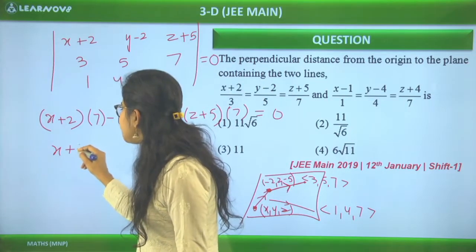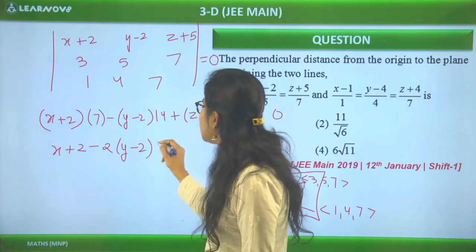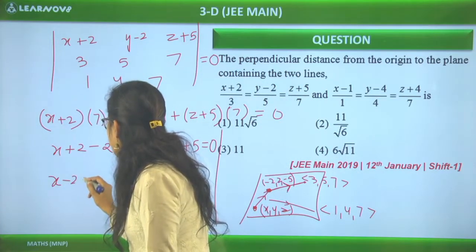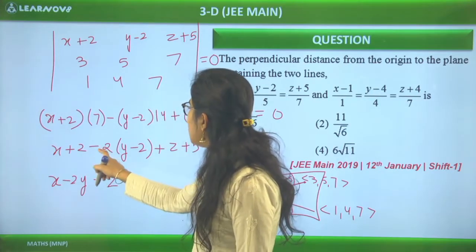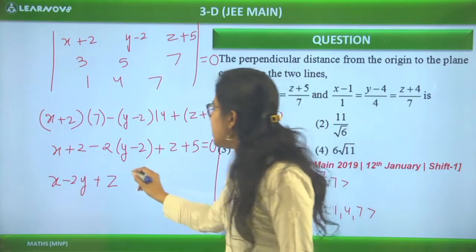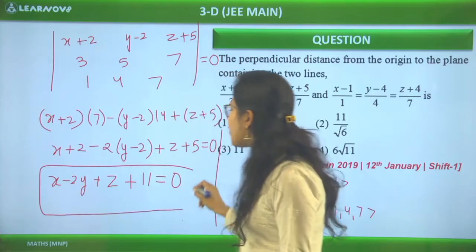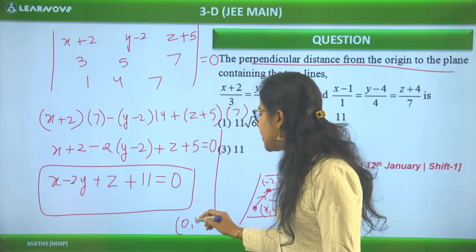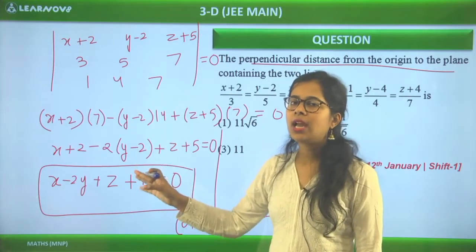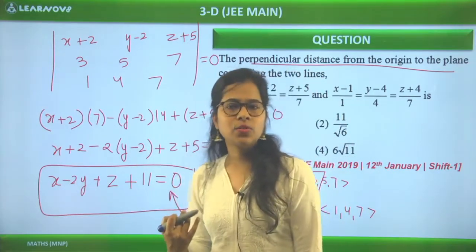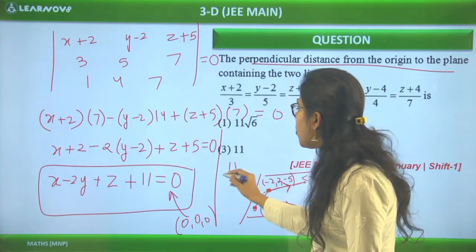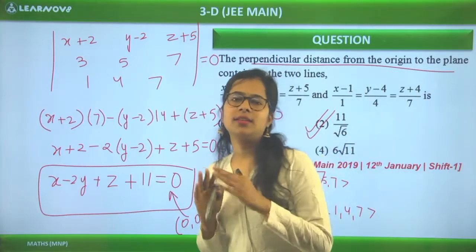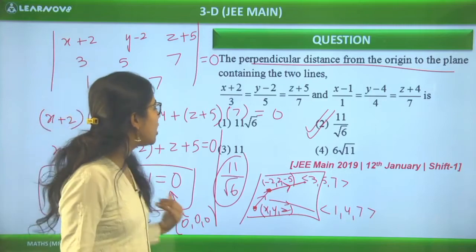The plane equation is x - 2y + z + 11 = 0. The perpendicular distance from the origin (0, 0, 0) is found by substituting into the distance formula: |0 - 0 + 0 + 11| / √(1² + (-2)² + 1²) = 11/√6. So the answer is 11/√6, which is option number 2.